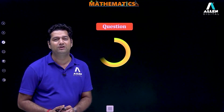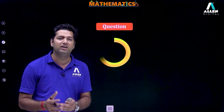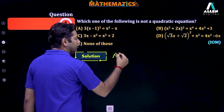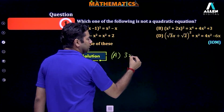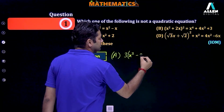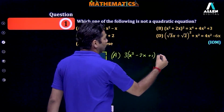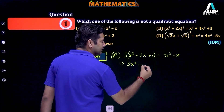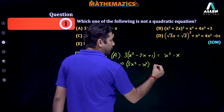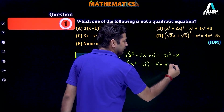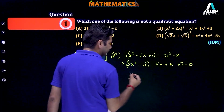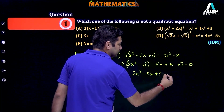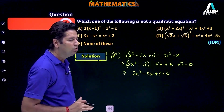Let's discuss some previous years' Olympiad questions based on this. Starting with the first question: which one of the following is not a quadratic equation? For option one: 3x square minus 2x plus 1 equals x square minus x. We can write this as 3x square minus x square minus 6x plus x plus 3 equals 0, giving 2x square minus 5x plus 3 equals 0. This is a quadratic equation, so this option is not the correct answer.